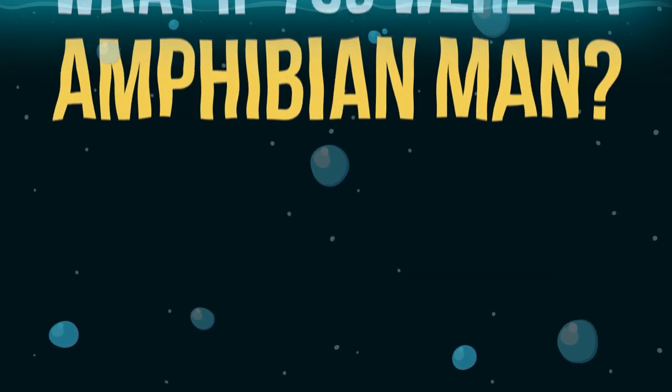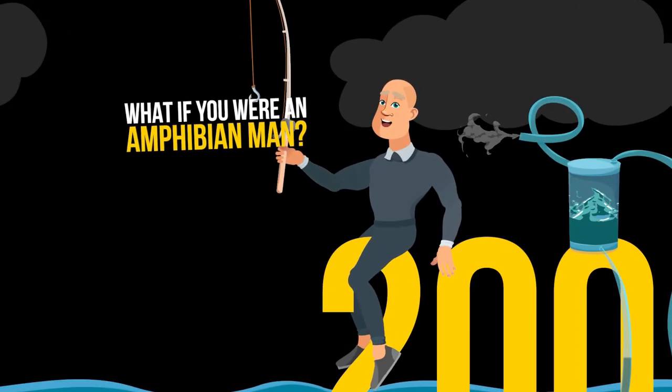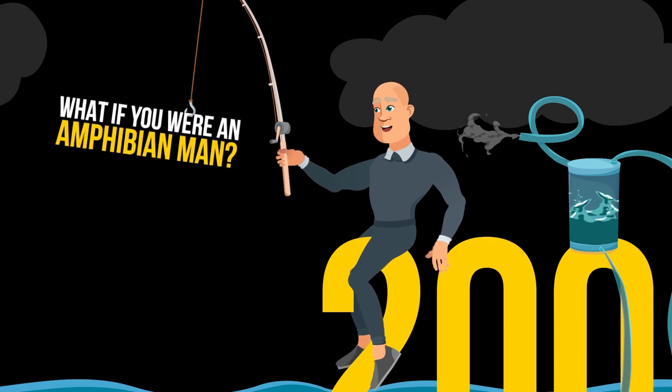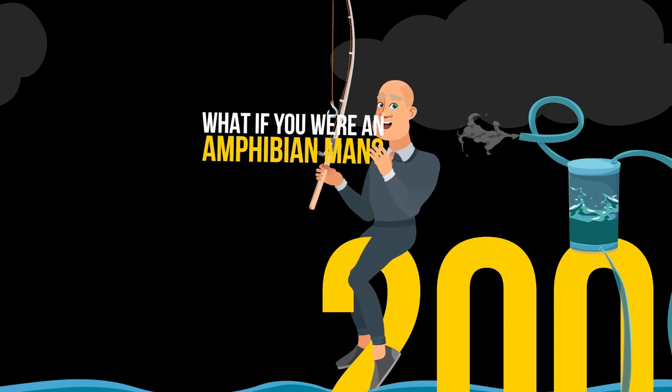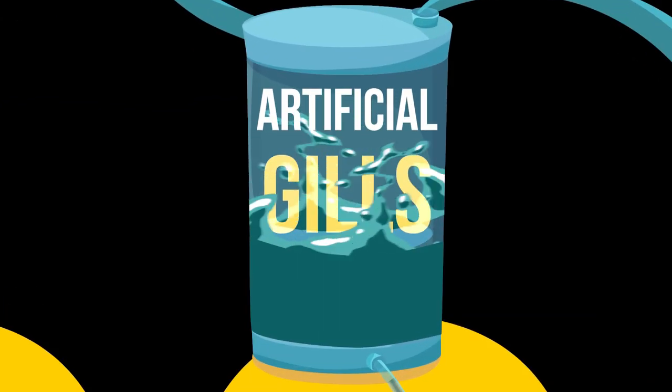What if you were an amphibian man? In 2001, Israeli scientist Alon Badner developed the Like-a-Fish technology. He later developed artificial gills.